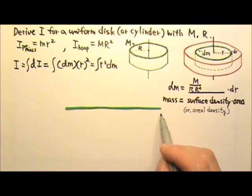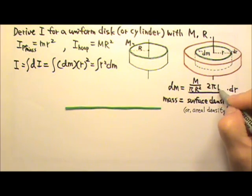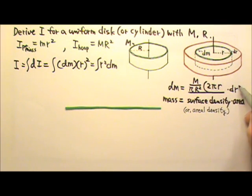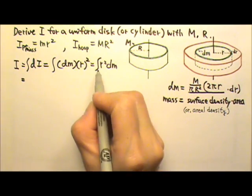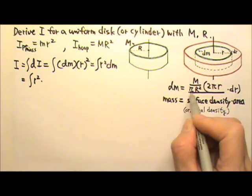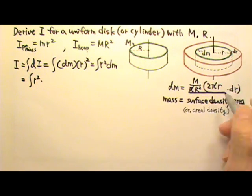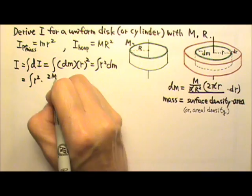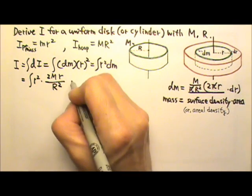The base of the rectangle is the circumference of the thin hoop, that is 2πr. So 2πr times dr, the height times the base for this thin rectangle, is the top area of this thin hoop. So we can now rewrite this as the integral of r². And then we can replace the dm with this whole thing right here, which has the π's cancel. And then we have 2m times little r over big R² and then dr.